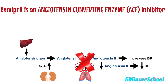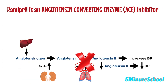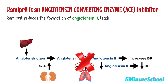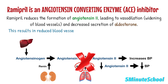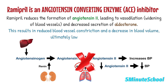By inhibiting the angiotensin converting enzyme, Ramipril reduces the formation of angiotensin 2, leading to vasodilation — widening of blood vessels — and decreased secretion of aldosterone. This results in reduced blood vessel constriction and a decrease in blood volume, ultimately lowering blood pressure.